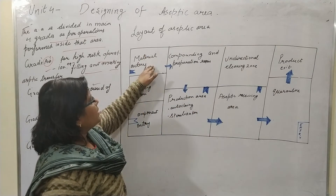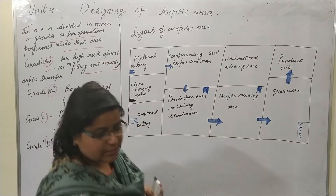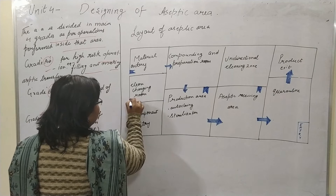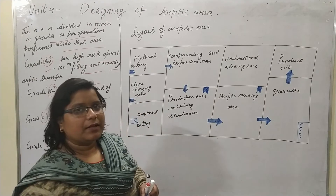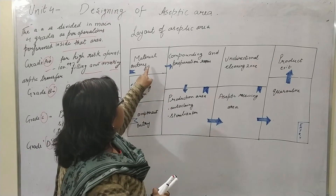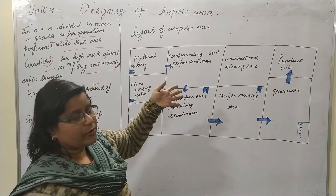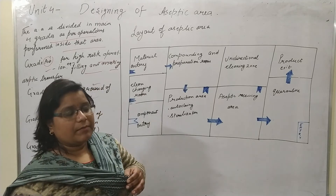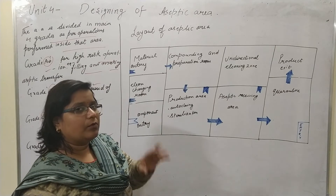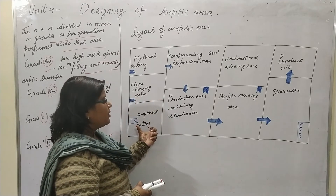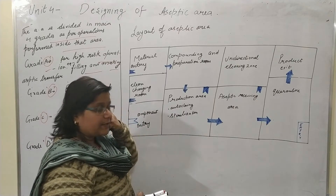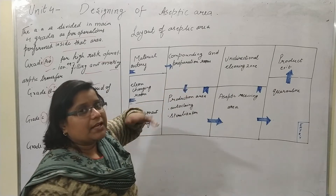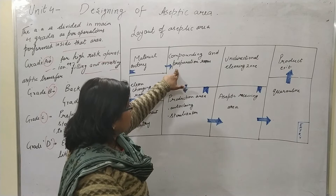Regarding the layout, there are three main entries: material entry, clean changing room, and component entry. Material entry is for materials used in compounding and preparations. The clean changing room is where persons change into complete gowns, masks, and all required attire. Component entry is for other components entering the area. After entry, compounding and preparation takes place — all mixing and primary work happens in the compounding and preparation area.